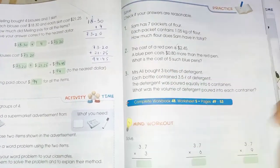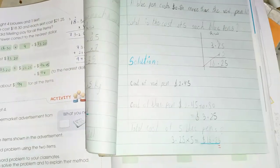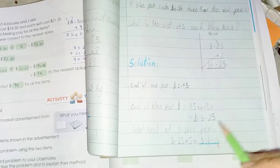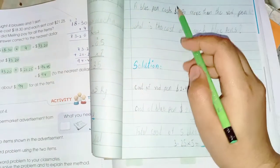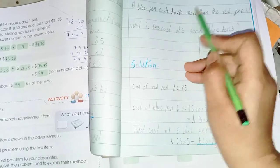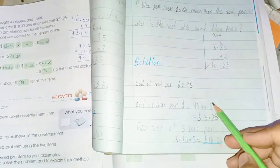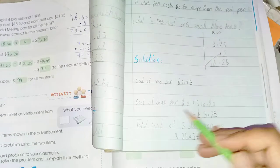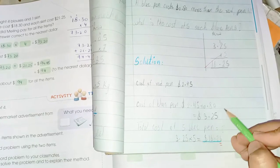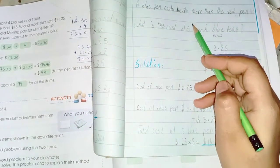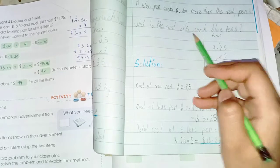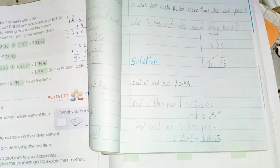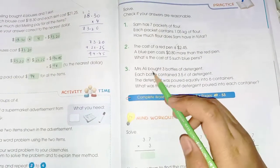So in this question we simply write the solution. Cost of red pen: $2.45. Cost of blue pen: the blue pen is $0.80 more than the red pen, so first we add 2.45 and 0.80. The answer is $3.25. Now we multiply this 3.25 with 5 because we have to find the cost of 5 pens. So the answer is $16.25.